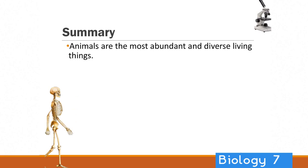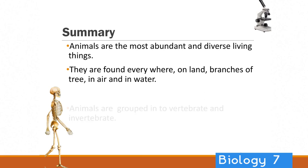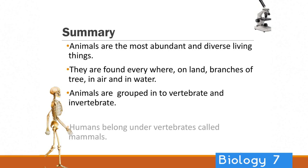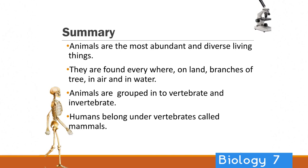Let's summarise what we've just learnt. Animals are the most abundant and diverse living things — they're found everywhere: land, in the air, in the water. The animals can be divided into vertebrates and invertebrates. Humans are vertebrates and specifically within the vertebrates, a group called mammals.